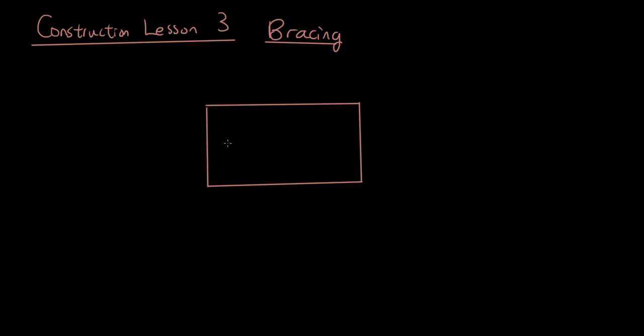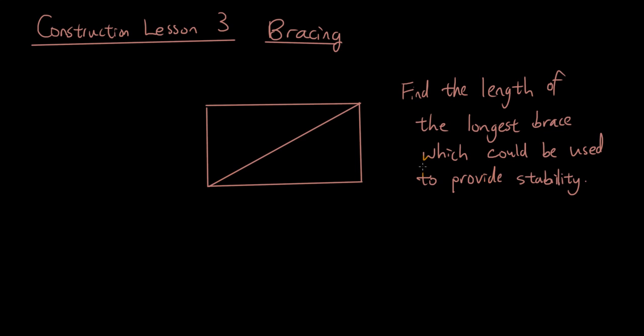So to make a rectangular frame stronger, typically we will attach a bit of bracing to it. The brace looks like something like this, a diagonal brace, which could possibly be a timber or a metal strap. So find the length of the longest brace which could be used to provide stability.